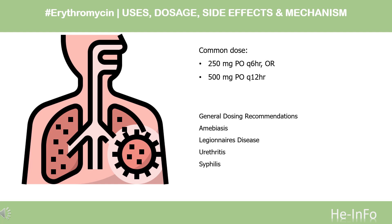Urethritis caused by C. trachomatis or U. urealyticum: 500 mg PO every 6 hours for 7 days. Alternatively, 333 mg PO every 8 hours for 7 days. Syphilis: 30–40 g PO in divided doses for 10–15 days.